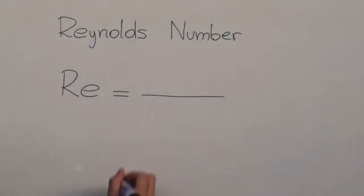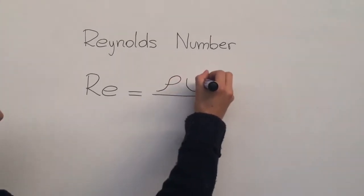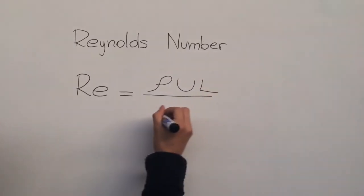What an interesting fact! But what is the Reynolds number? The Reynolds number is a measure of the ratio of inertial and viscous forces in a fluid flow.